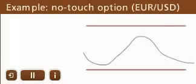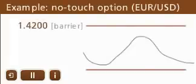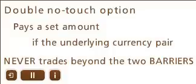For example, imagine you buy a no-touch option on the EURUSD with a barrier of 1.42. If the EURUSD currency pair never moves to touch that barrier at 1.42, you will be profitable. A double no-touch option is an option that automatically pays a set amount if the underlying currency pair never trades at or beyond either of two specified price levels, or barriers, before expiry. In other words, you make money on a double no-touch option if the currency pair never touches either one of two predetermined prices.